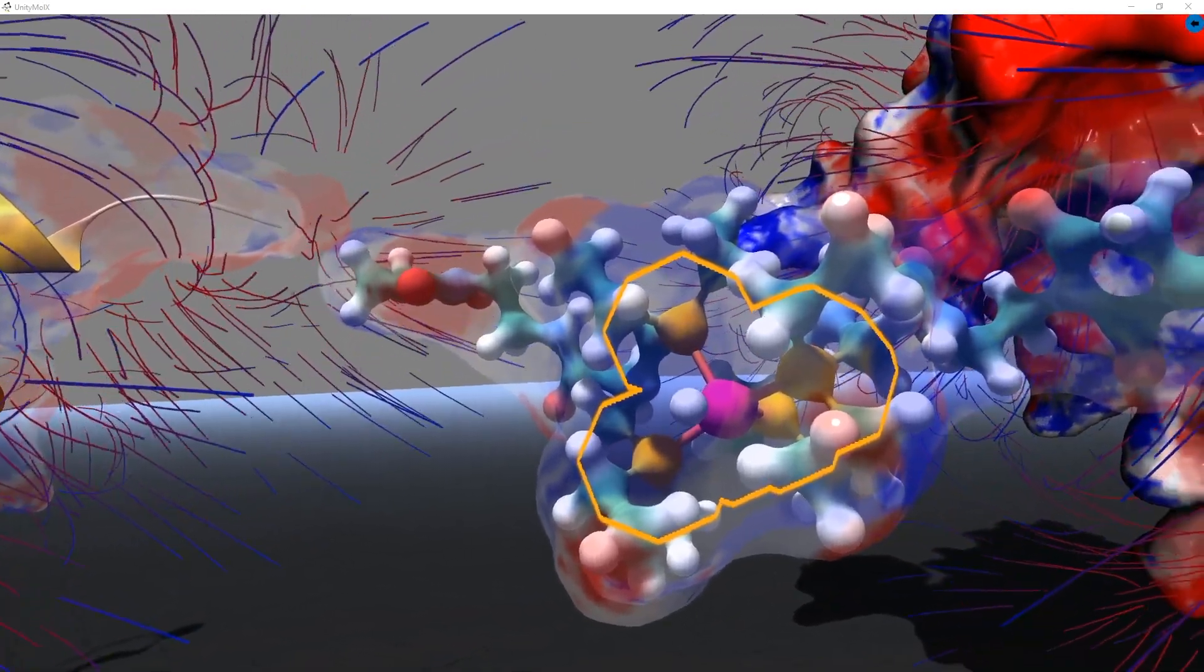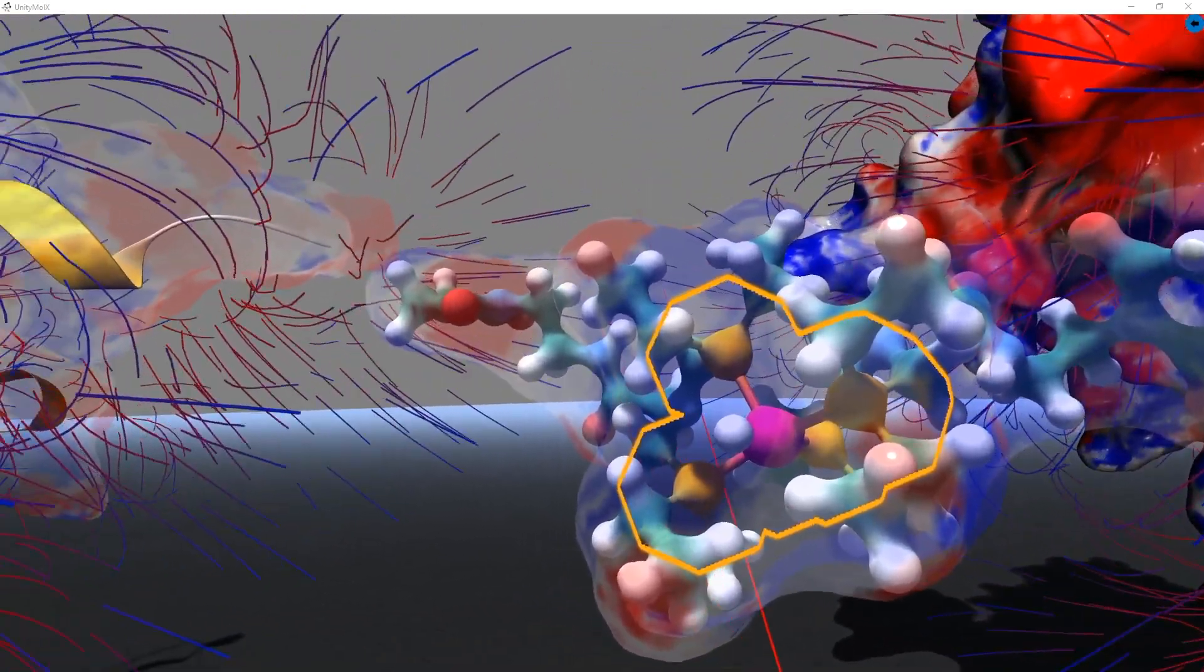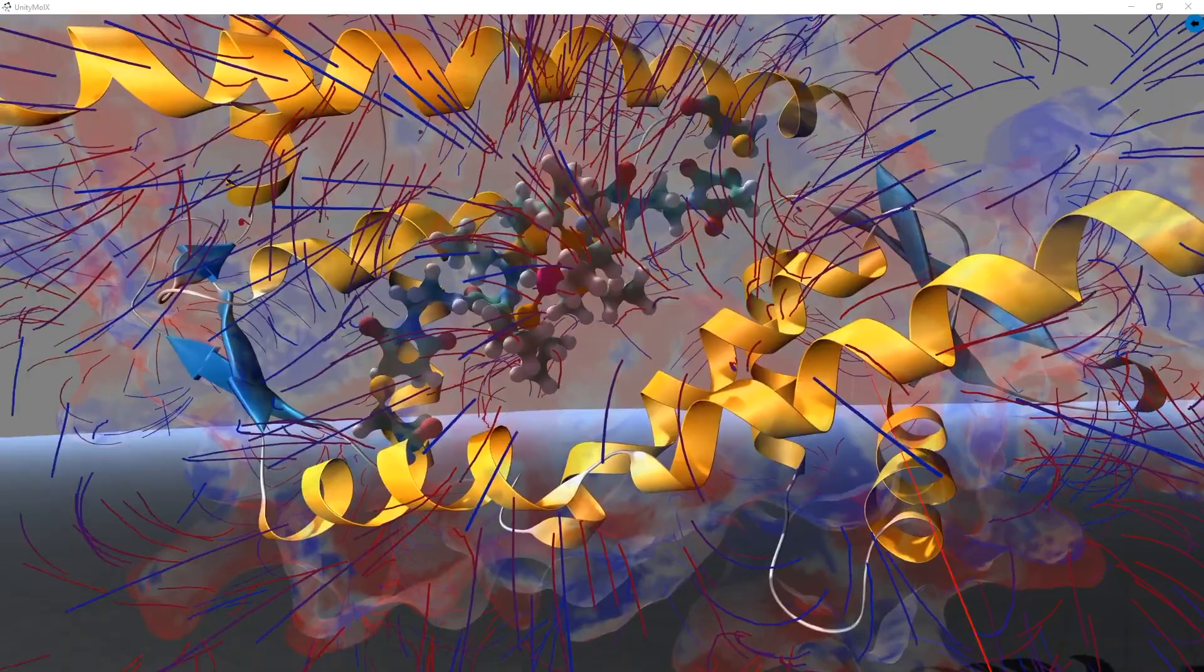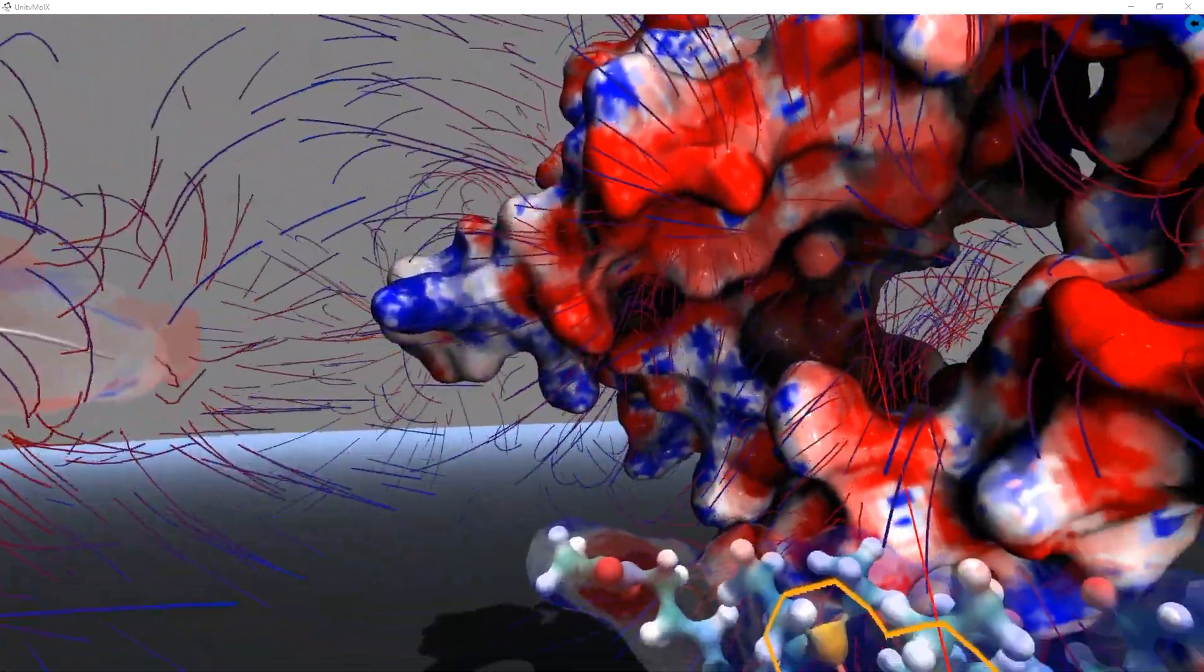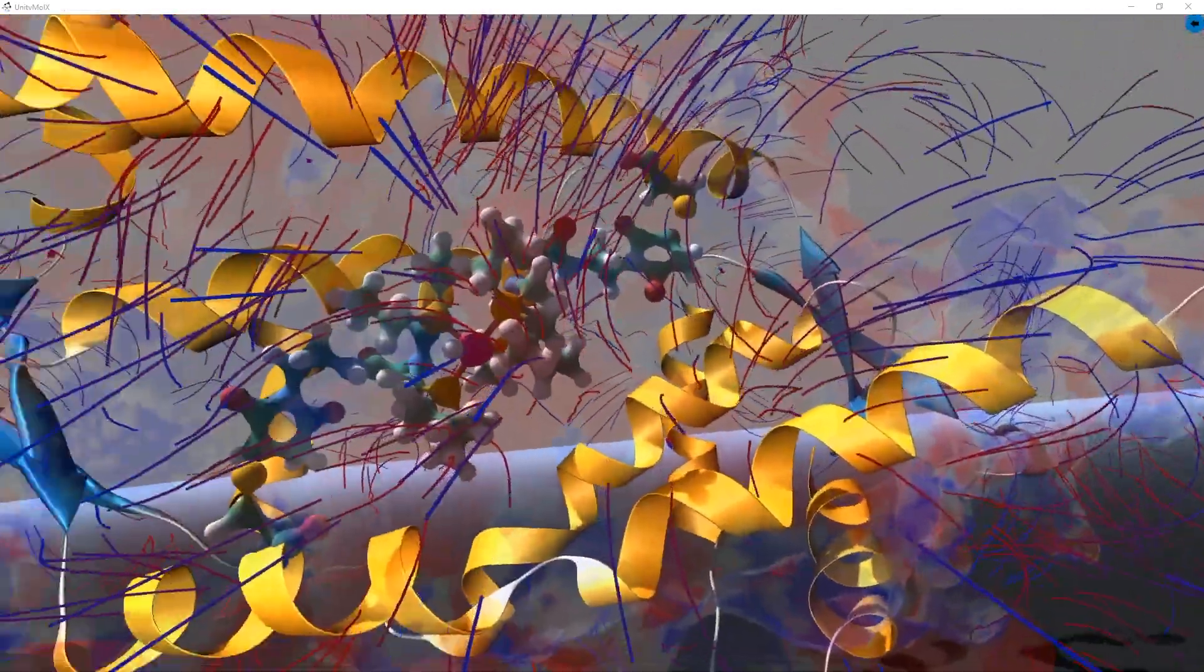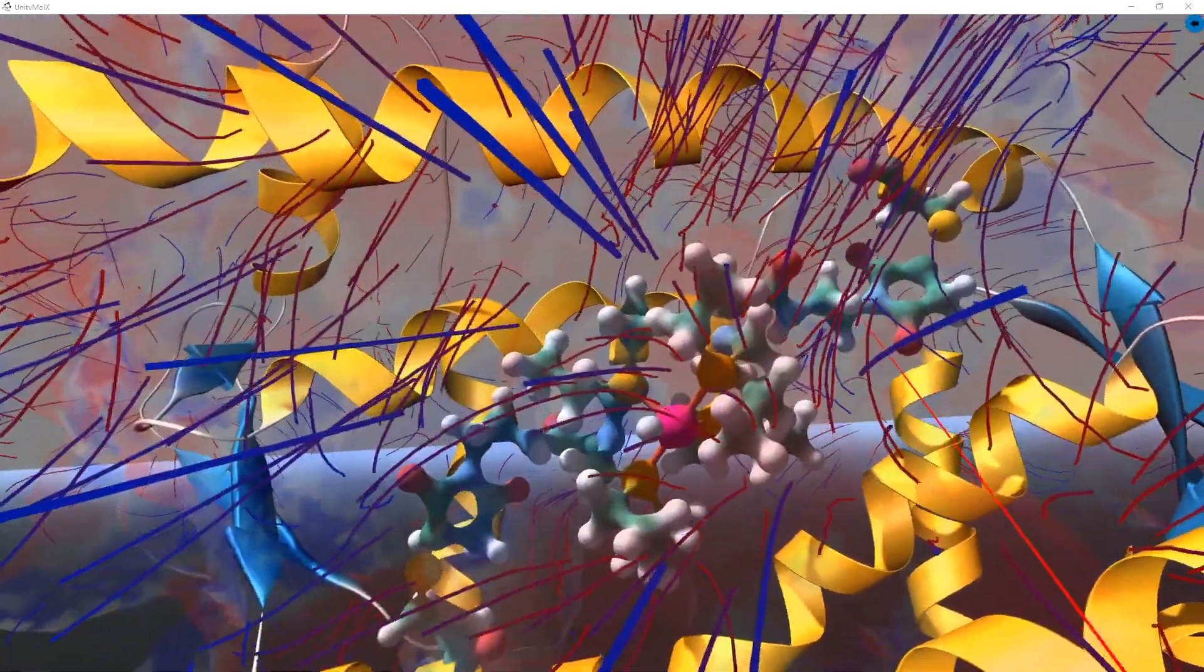The UnityMole APBS software will automatically create the input files necessary for multi-value, so users do not have to sift through coordinate files to find specific atoms. Multi-value will automatically set these up and write them to a file for the users.